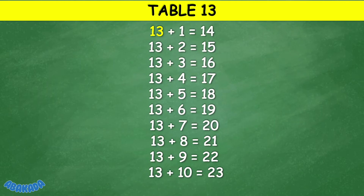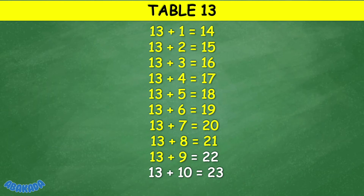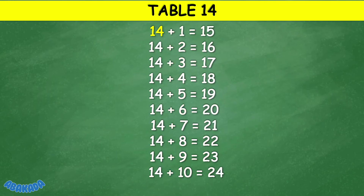Table 13: 13 plus 1 equals 14, 13 plus 2 equals 15, 13 plus 3 equals 16, 13 plus 4 equals 17, 13 plus 5 equals 18, 13 plus 6 equals 19, 13 plus 7 equals 20, 13 plus 8 equals 21, 13 plus 9 equals 22, 13 plus 10 equals 23.